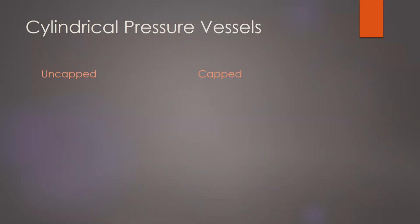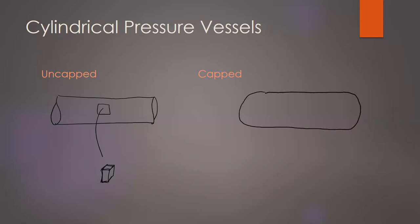When talking about cylindrical pressure vessels, we have two types: capped and uncapped. Uncapped is typically like a pipe. In the case of the uncapped pipe, we will only have one stress component.